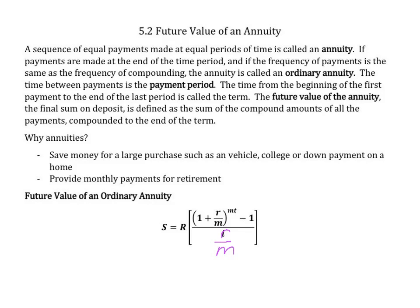The time between payments is called the payment period. The time from the beginning of the first payment to the end of the first period is called the term. The future value of an annuity — the final sum on deposit — is defined as the sum of the compounded amounts of all the payments compounded to the end of the term.